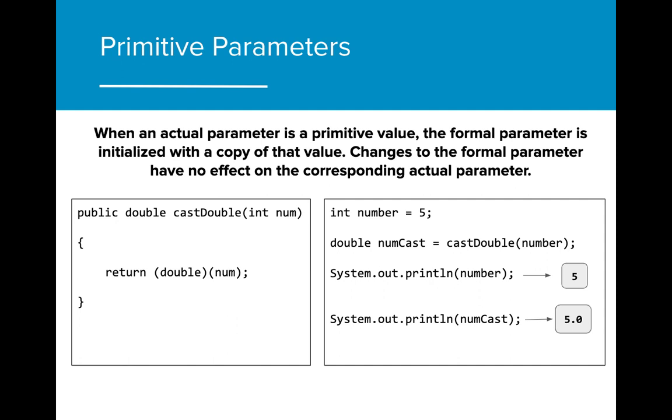When castDouble is called on number, int num is initialized with the value of number, which is 5, and returned to the program to be initialized in the variable numcast.